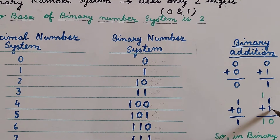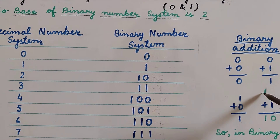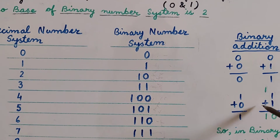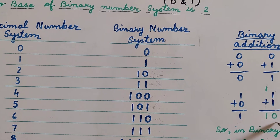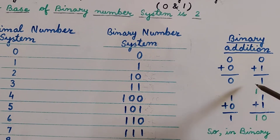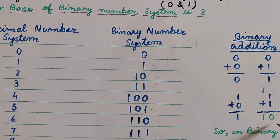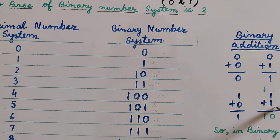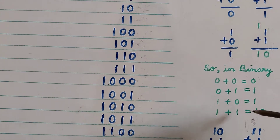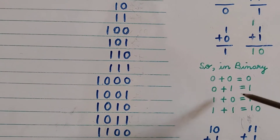If 1 and 1 are added in binary, the sum is 0 with a carry of 1. Since there are no more digits, the 1 is carried down, so the answer is 1 0. So 1 plus 1 equals 10 in binary. To summarize: 0+0=0, 0+1=1, 1+0=1, and 1+1=10. We will follow this rule of binary addition to represent any decimal number in binary.